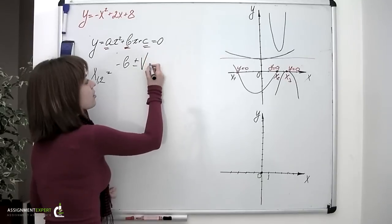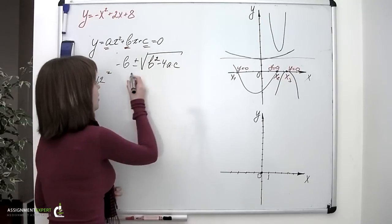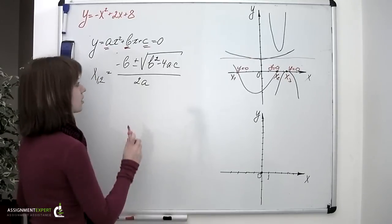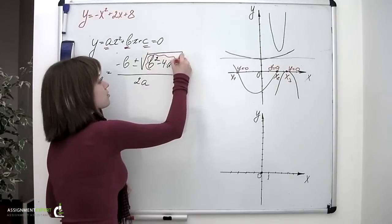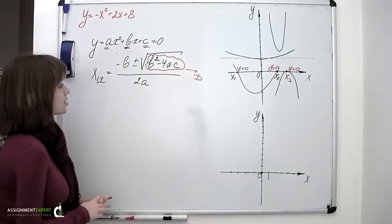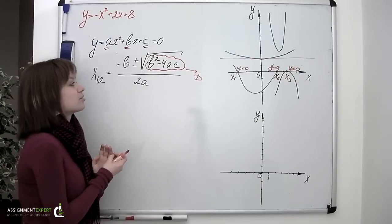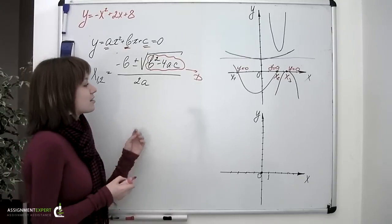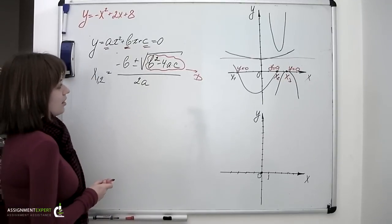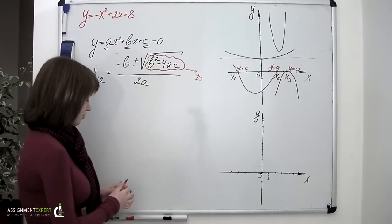x equals negative b plus or minus square root of squared b minus 4 times a times c and divided by two a's. The expression under the square root is called a discriminant. And what's so special about it? The thing is that like any other expression lying under the root of an even power, discriminant can be a negative number. And it is this particular feature that lets us find out exactly how many roots the equation has.